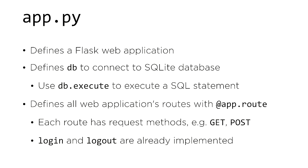These routes can take a variety of different request methods — most notably GET, for getting the contents of a page, and POST, generally used if you're submitting data to a particular route. Some routes have already been implemented for you, such as login and logout. Let's take a look at the login route to get a sense for how routes in Flask, this web framework, actually work.